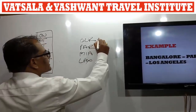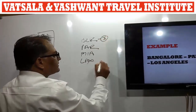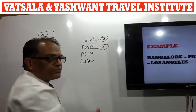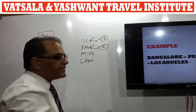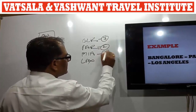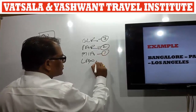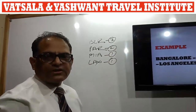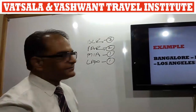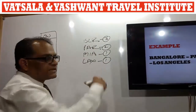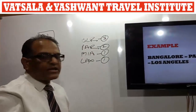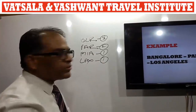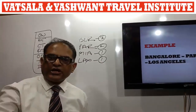Bangalore is in India — India is in Area 3. Paris, France is in Area 2. Miami, USA is in Area 1. Los Angeles is also in Area 1. In this journey, the passenger is traveling from Area 3 through Area 2 and into Area 1.